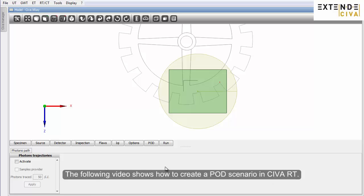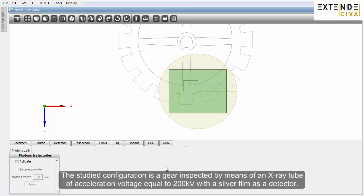The following video shows how to create a POD scenario in SIVAR-RT. The studied configuration is a gear inspected by means of an X-ray tube of acceleration voltage equal to 200 kV, with a silver film as a detector.